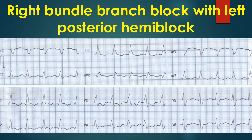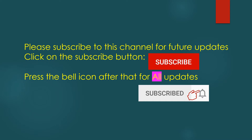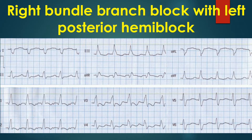In V1, there is a QR pattern suggesting interval infarction with right bundle branch block, or QRBBB. The QRS shows right axis deviation with dominant negative deflection in leads 1 and AVL, and dominant positive deflections in AVF, along with RS pattern in lead 1 and QR pattern in leads 3 and AVF, suggesting left posterior hemi block.